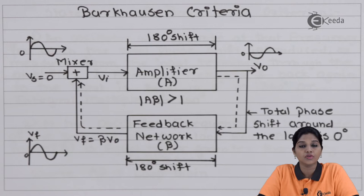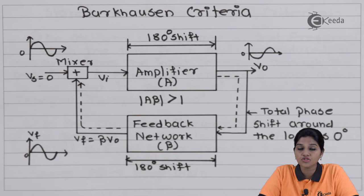In order to provide proper or sustained oscillations, it is very important that the amplifier circuit satisfies certain criteria, and that criteria is called Barkhausen's criteria. So let's understand Barkhausen's criteria in detail.